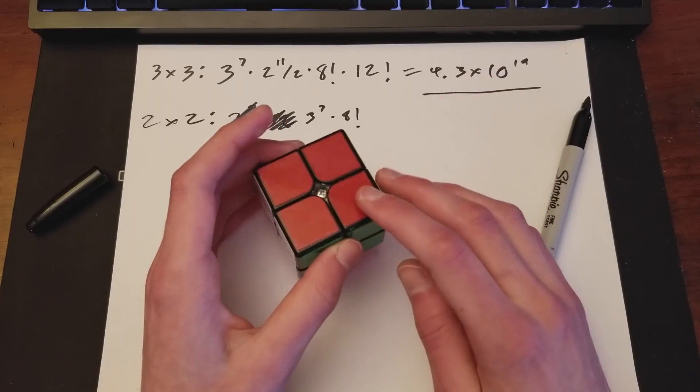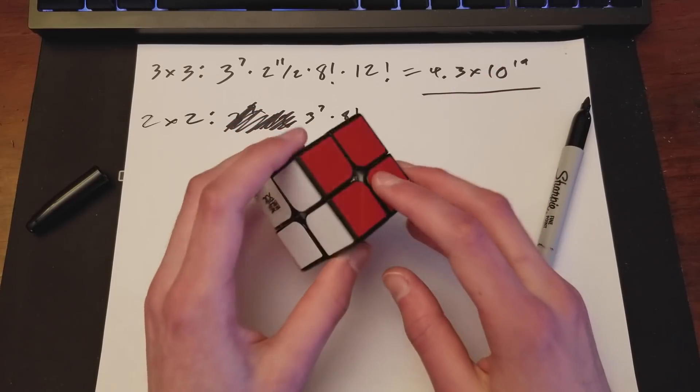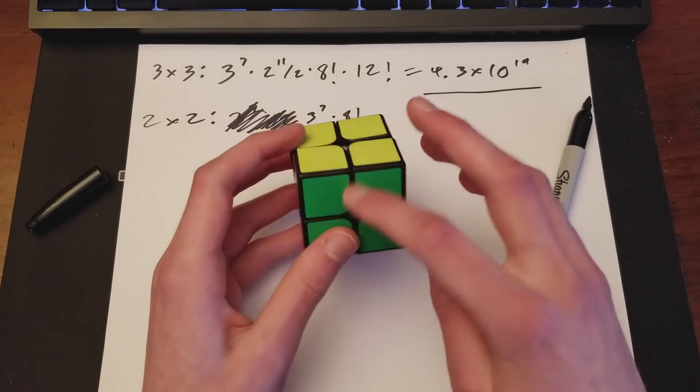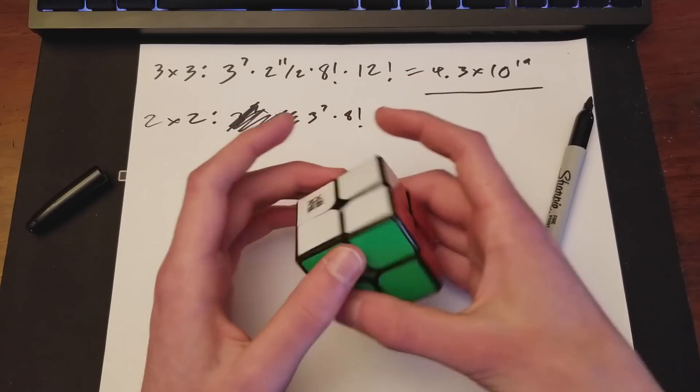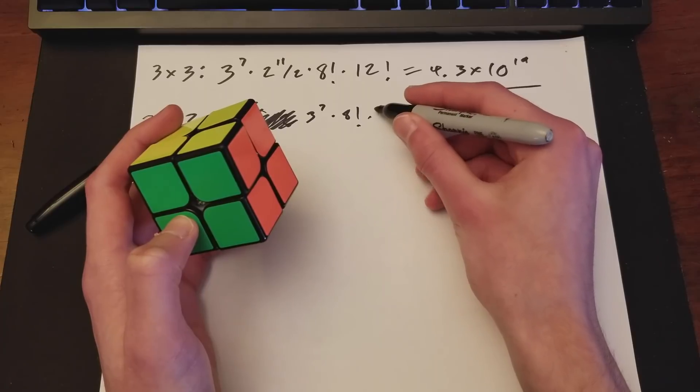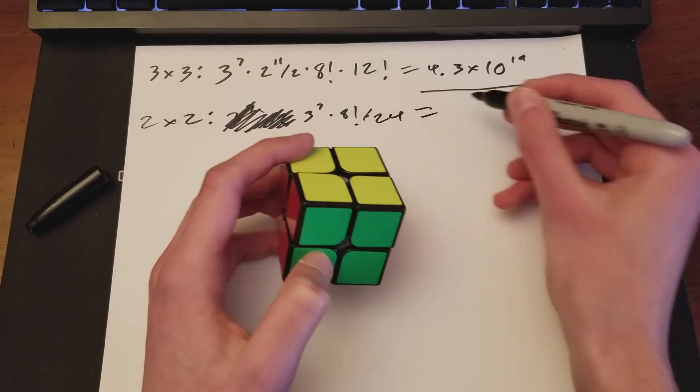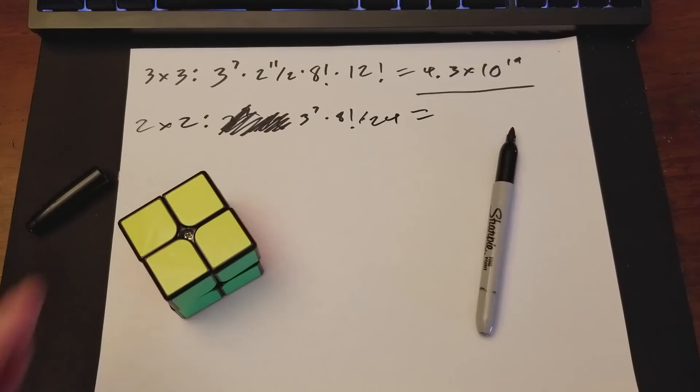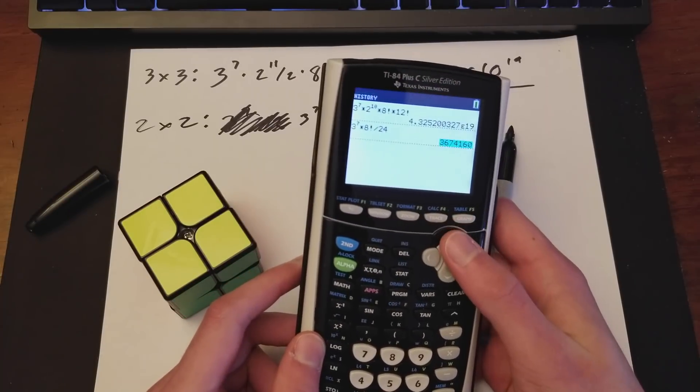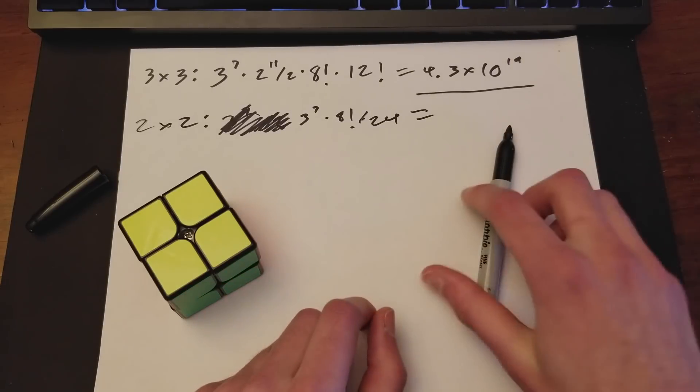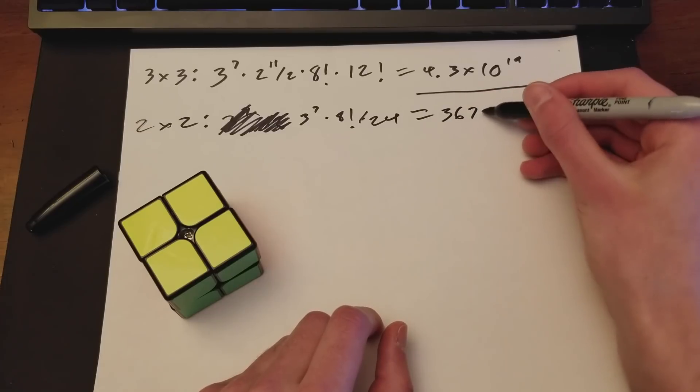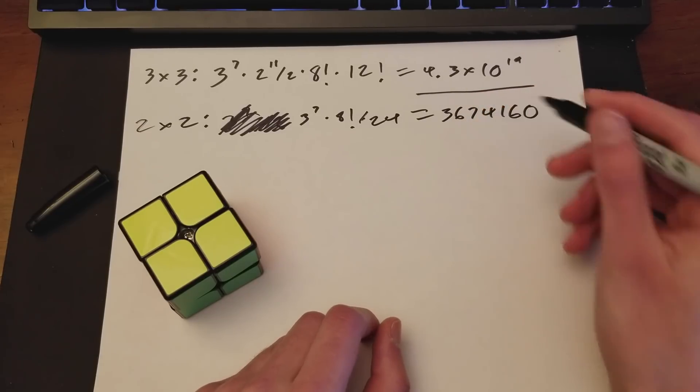And things get a little bit more interesting as you move on to 2x2. So there aren't edges, which is nice. So basically, all you have to consider is corner permutation and orientation. So 3 to the 7 times 8 factorial. But one thing you need to account for is rotational symmetry. So basically, let's say you have this configuration. That really should be the same as doing an x prime. But when you do this number, that does not account for it currently.